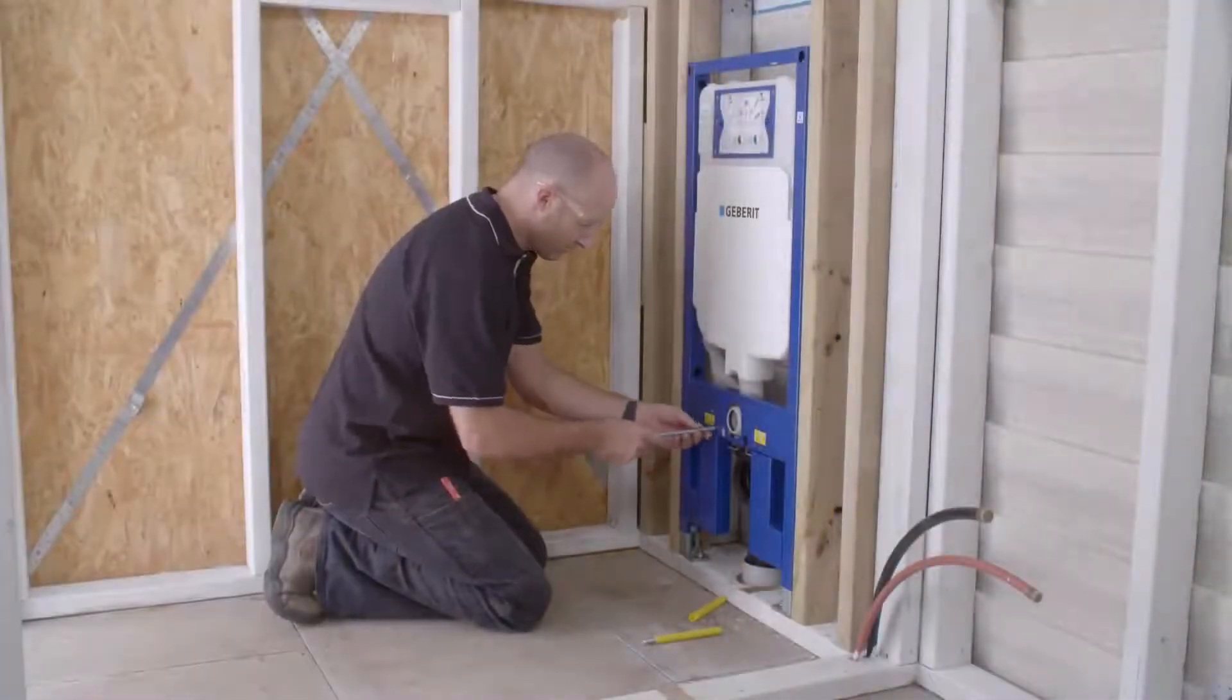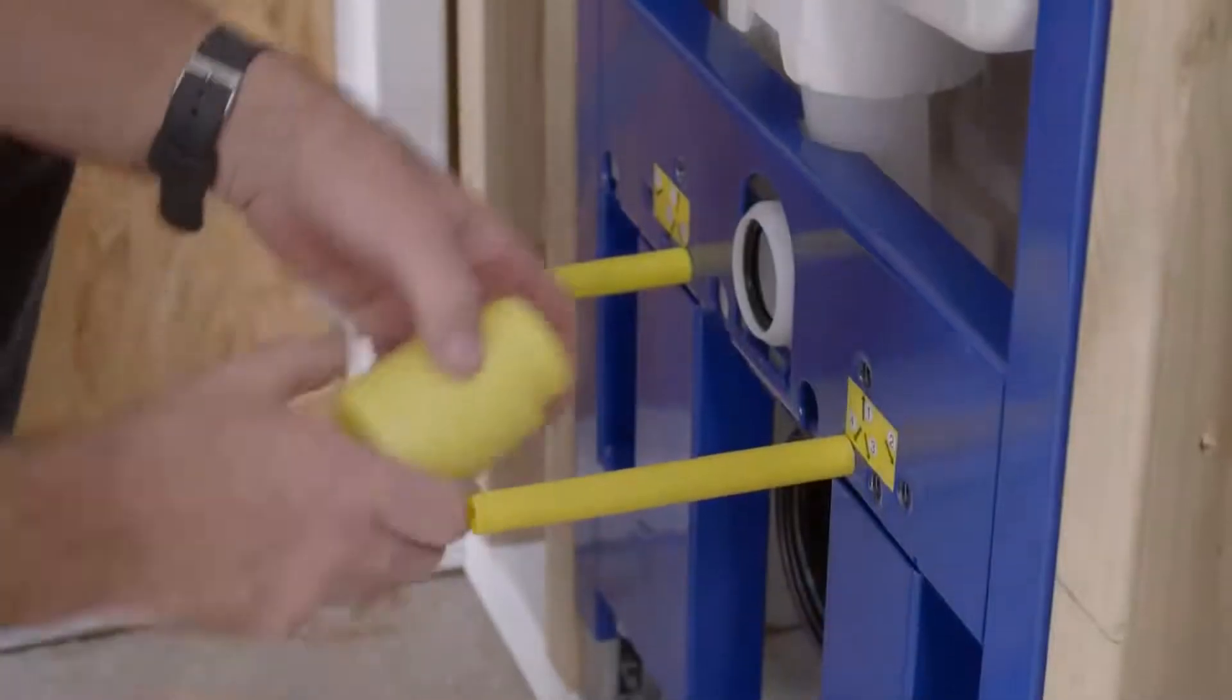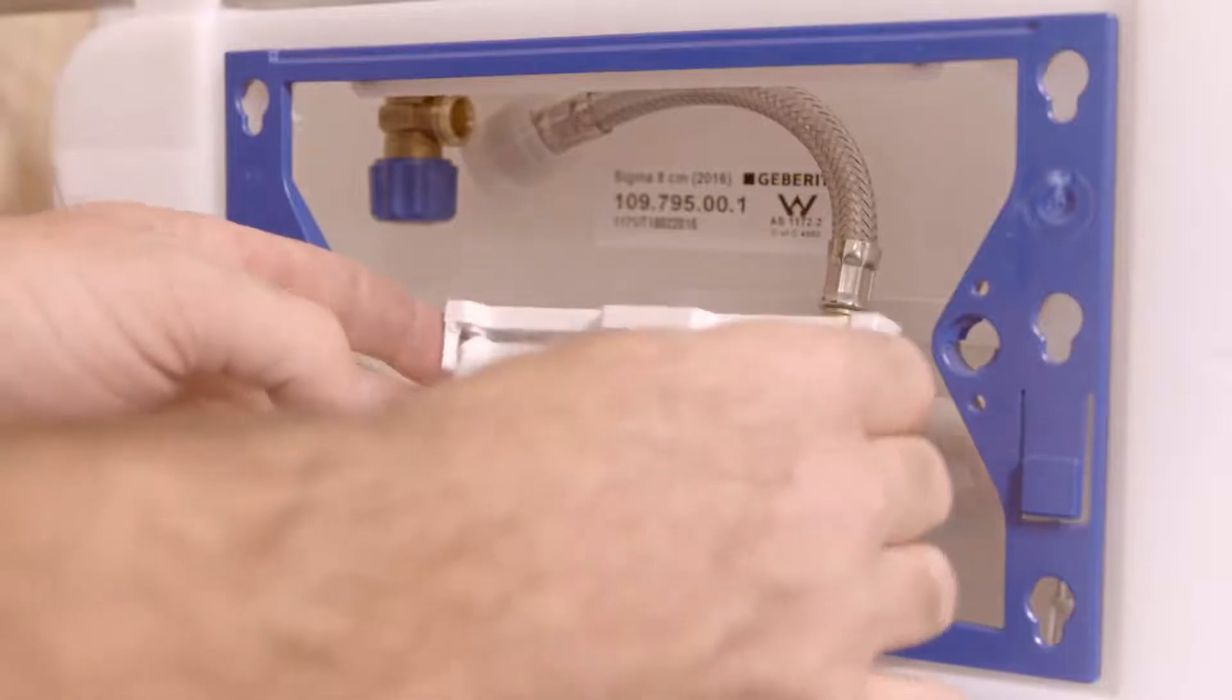Screw the pan fixing bolts into the correct holes for the pan. Refer to the installation instructions for more information. Now, install the dust cap. You're now ready to connect the water supply.